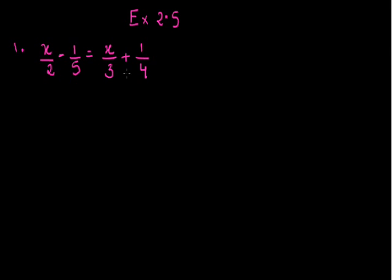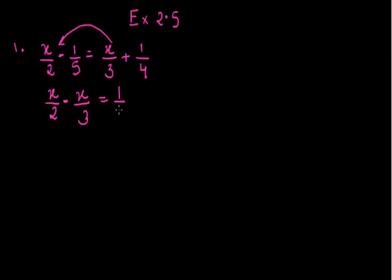What I can do is take x upon 3 to the left hand side. If I take x upon 3 to the left hand side, its sign will change. So x upon 2 minus x upon 3 is equal to 1 upon 4. And when I take minus 1 upon 5 to the right hand side, it will become plus 1 upon 5.